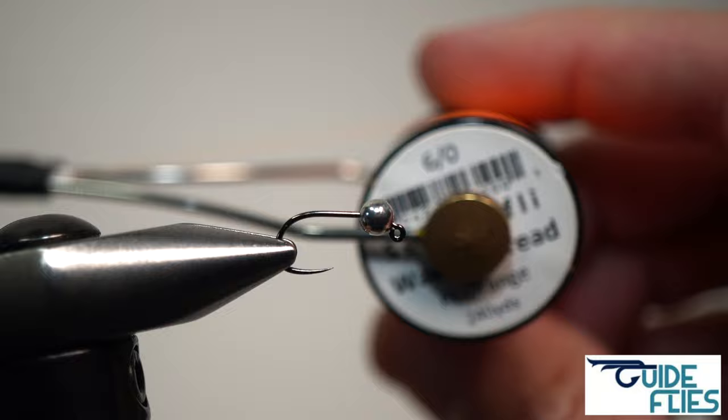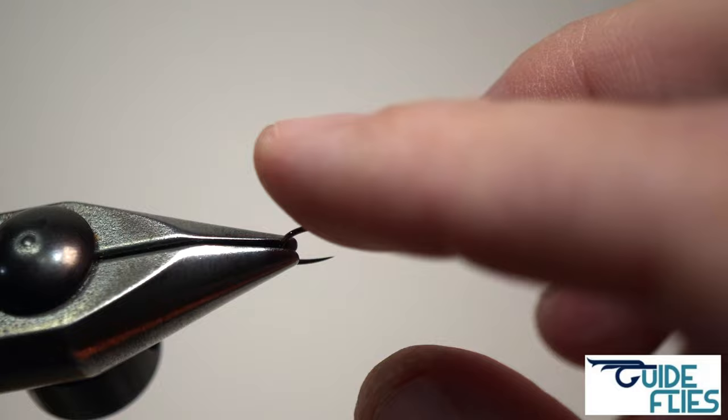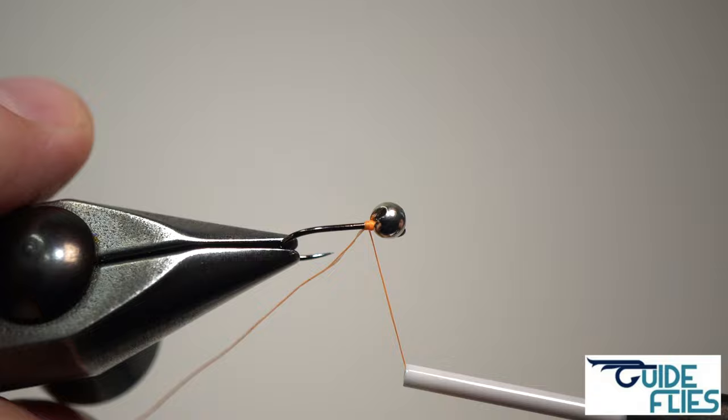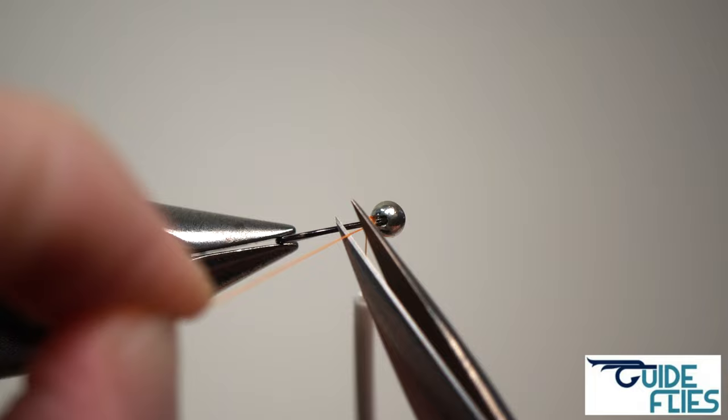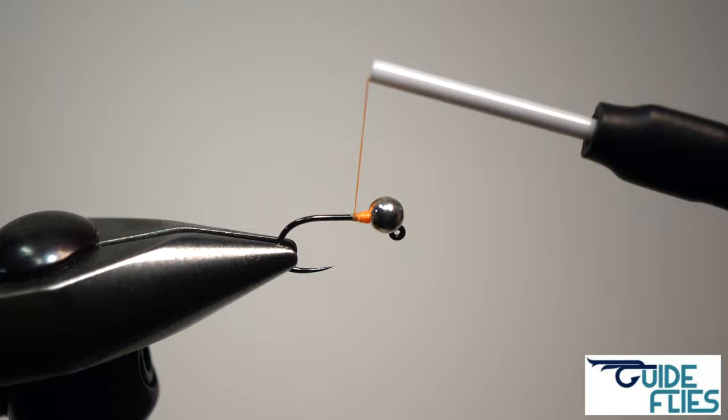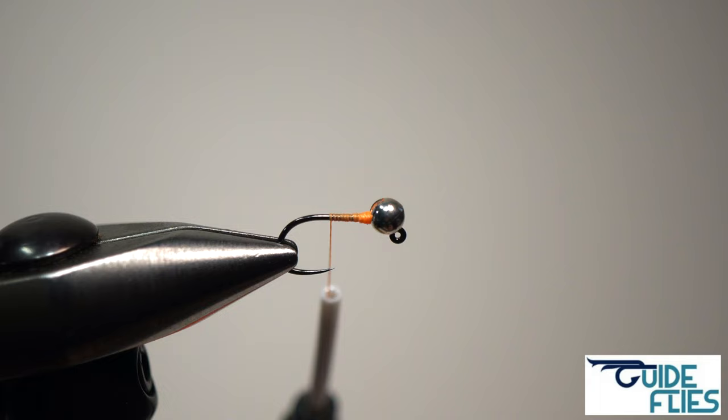Now we're just going to start our 6-0 fluorescent orange wax thread here behind the bead head and create a jam knot to keep it centered on the hook. A good quality bead is going to have a nice small slot to it so you're getting a lot of tungsten for your money on those beads. The Umpqua ones are really good quality tungsten. We're just going to get a good thread base going towards the hook bend and that's going to give our tailing material something to lock into and start the taper of the fly.